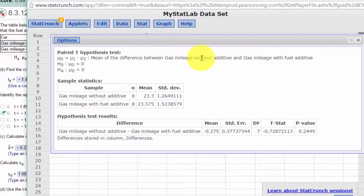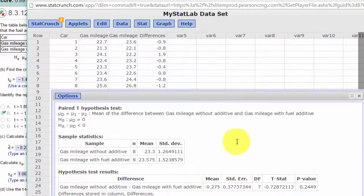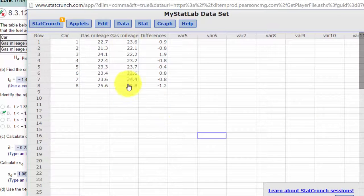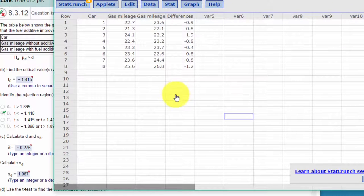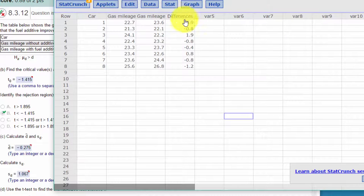The final piece of information we need is S sub D, the standard deviation of the differences. You recall when we were running the hypothesis test, I said to check that box that saves the differences.